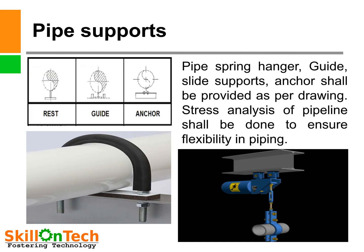Here you can see a picture of pipe supports. Pipe supports are very important to keep the pipeline in position and supported. In steam pipelines, expansion loops are provided to accommodate expansion due to temperature, therefore flexibility in pipeline is very important. You can see pictures of piping supports — rest support, guide support, and anchor support. Another picture shows a clamp support and a hanger support. Pipe spring hangers, guide supports, slide supports, and anchors shall be provided as per drawing. Stress analysis of the pipeline shall be done to ensure flexibility in piping. All piping supports shall be provided adequately as per drawing; otherwise, during commissioning, supports may fail.